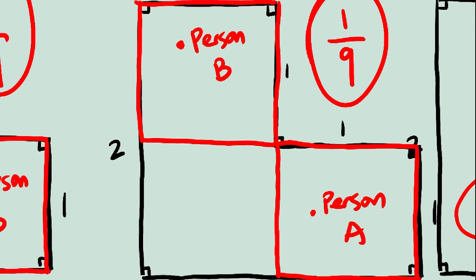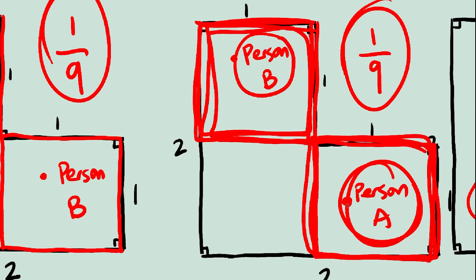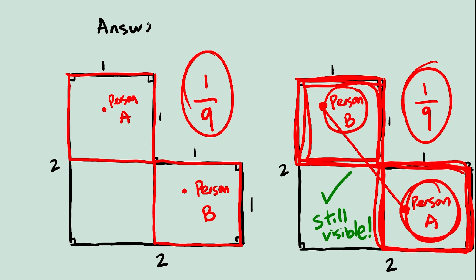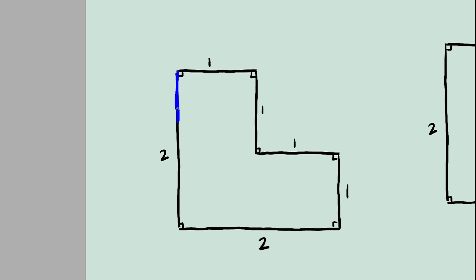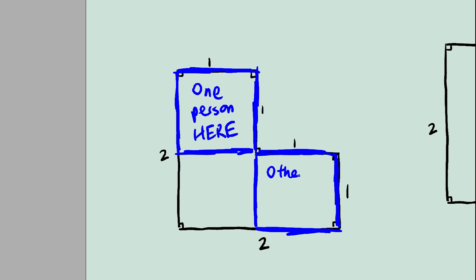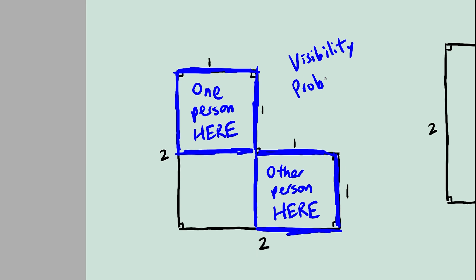But you'll notice that sometimes, each person is in their respective squares, but they can still see each other. So the answer isn't just 7 over 9. We need to figure out what's going on here. When can they see each other, and when can they not? But our problem is simpler now. We just need to figure out, if person A is in this square and person B is in this square, what's the probability that they can see each other?